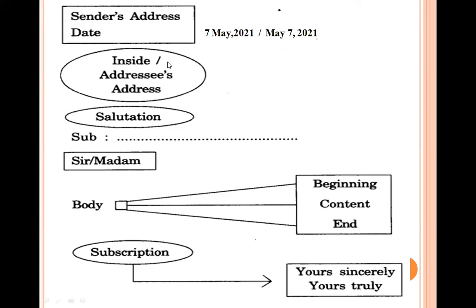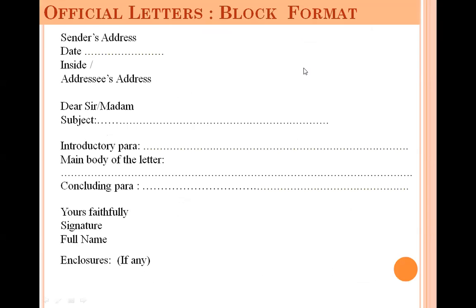For the date, you can write it as '7 May 2021' or 'May 7, 2021' — choose either format. Do not write it using slashes or hyphens (e.g., 7/5/20 or 7-5-20), as you will lose marks for that. After the date comes the inside address — the addressee's address.